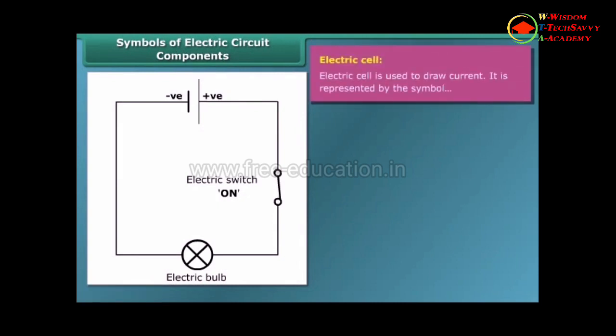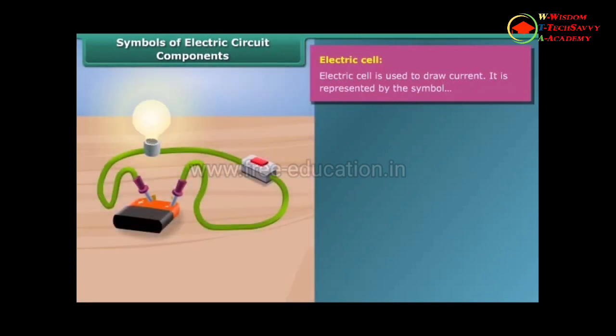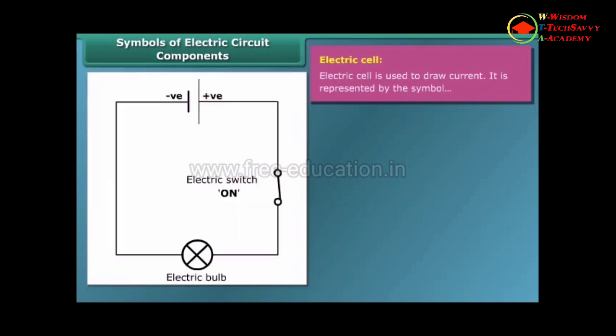Electric cell is a simple device which is used to generate electricity. Electricity is produced by chemical reaction. It has a positive terminal and a negative terminal. In the symbol of the electric cell, the longer line represents the positive terminal and the thicker shorter line represents the negative terminal.